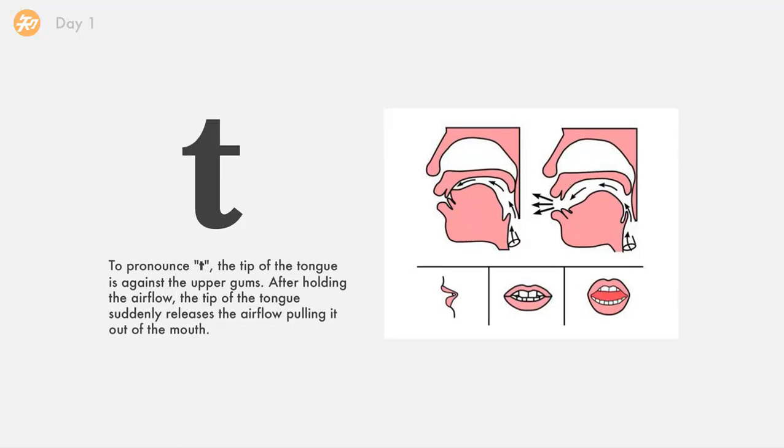The next one is t. To pronounce t, the tip of the tongue is against the upper gums. After holding the airflow, the tip of the tongue suddenly releases the airflow, pulling it out of the mouth.